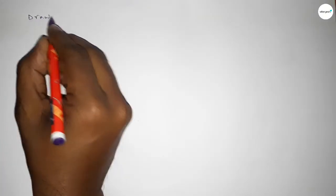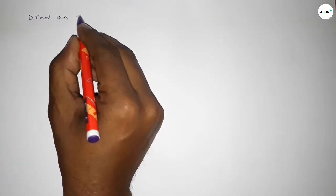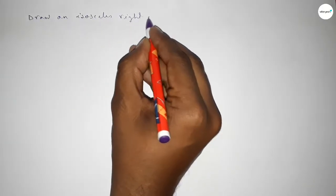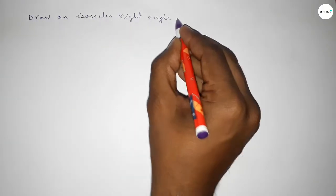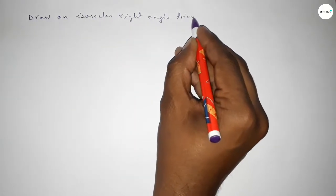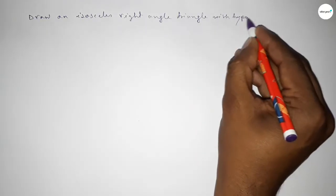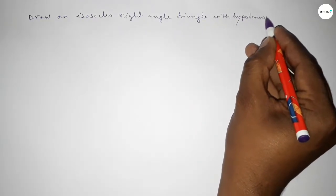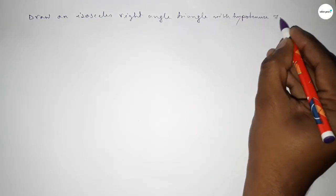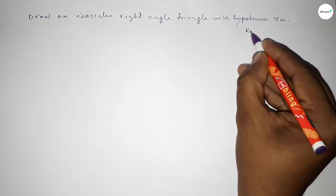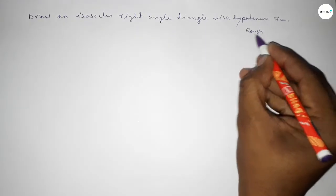Hi everyone, welcome to SI Share Classes. Today in this video we have to draw an isosceles right angle triangle with only the given hypotenuse of 7 centimeters. So let's start the video. First of all, let's roughly discuss the calculation.